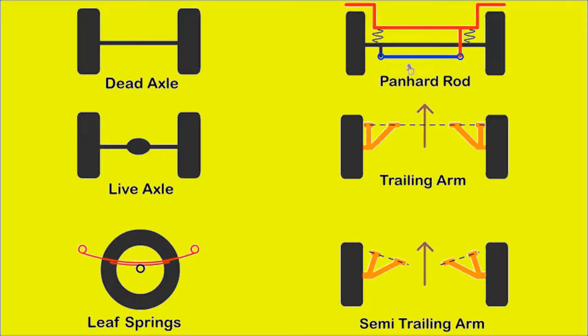The panhard rod is allowed to pivot at both ends. One end is attached to the car structure and the other to the axle. As the axle moves up and down, the panhard rod prevents lateral movement. They are common on trucks.